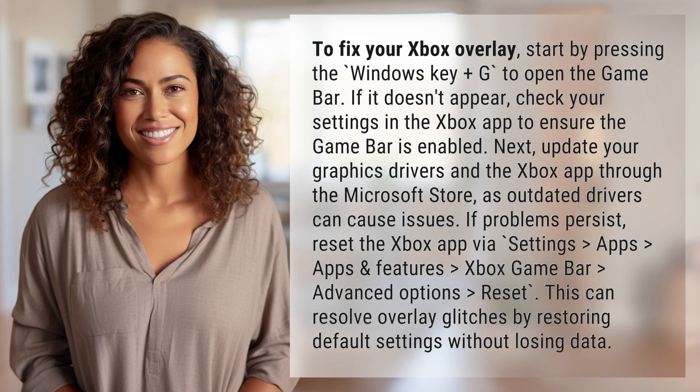To fix your Xbox overlay, start by pressing the Windows key plus G to open the Game Bar. If it doesn't appear, check your settings in the Xbox app to ensure the Game Bar is enabled.